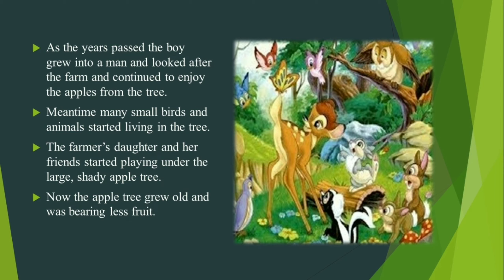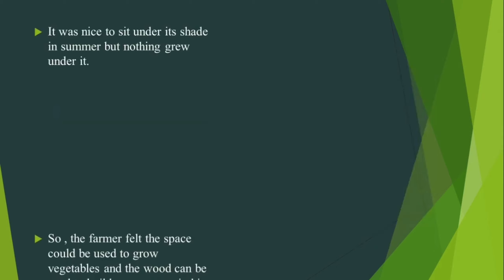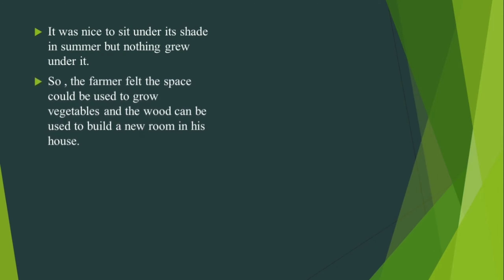Meanwhile, many small birds and animals started living in the tree. The farmer's daughter and her friends started playing under the large shady apple tree. Now the apple tree grew old and was bearing less fruit. It was nice to sit under its shade in summer, but nothing grew under it.